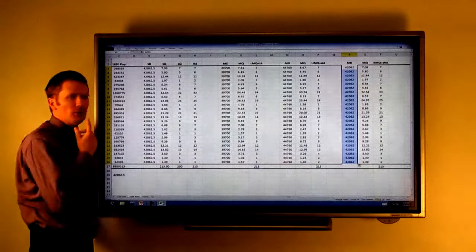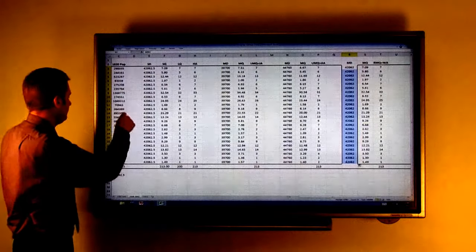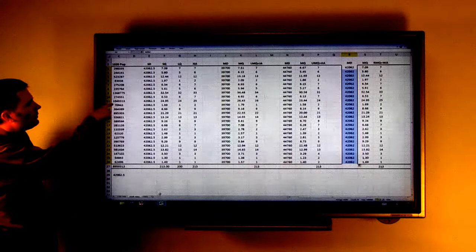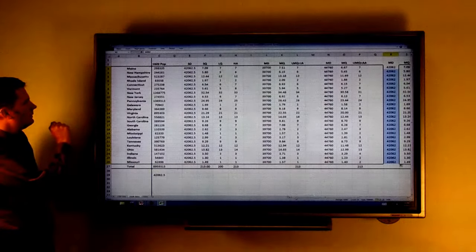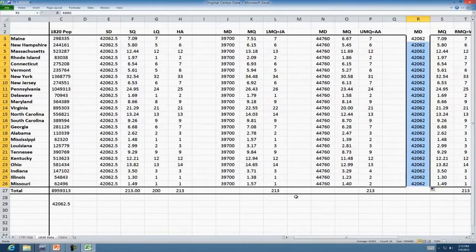Maybe as you're looking at this data, you're wondering which method favors which types of states. We could compare, if we scroll back over so that we can actually see the states here for a second. This really large state here in row 11 is Pennsylvania. Let's look. Jefferson's method gives Pennsylvania 26. Adam's method gives it 24. Let's find another large state. Virginia. Jefferson's method gives it 22. Adams gives it 21. Jefferson's method tends to favor the larger states. If you know any of your history, Jefferson was from the state of Virginia, which was one of the original largest states. Adam's method tends to favor the smaller states.